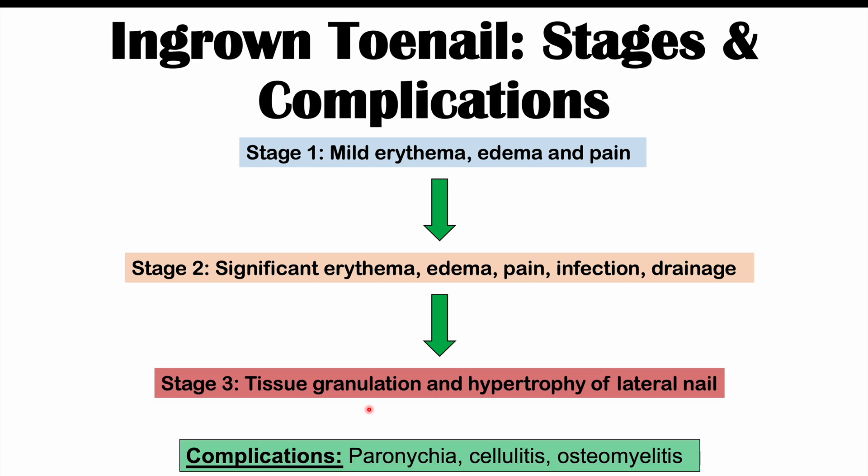Multiple complications can occur if an ingrown toenail is not treated appropriately. These include paronychia — an infection of the side of the nail — cellulitis, which is a skin infection, and osteomyelitis. In susceptible patients, an ingrown toenail infection can seed into the bone of the toe, causing osteomyelitis.